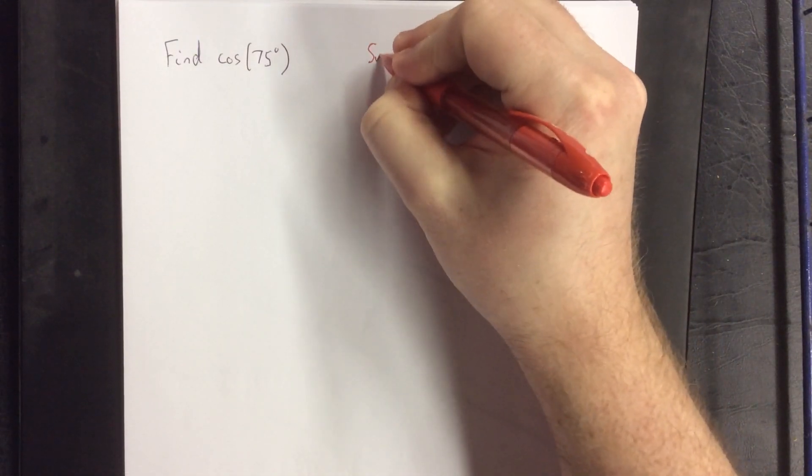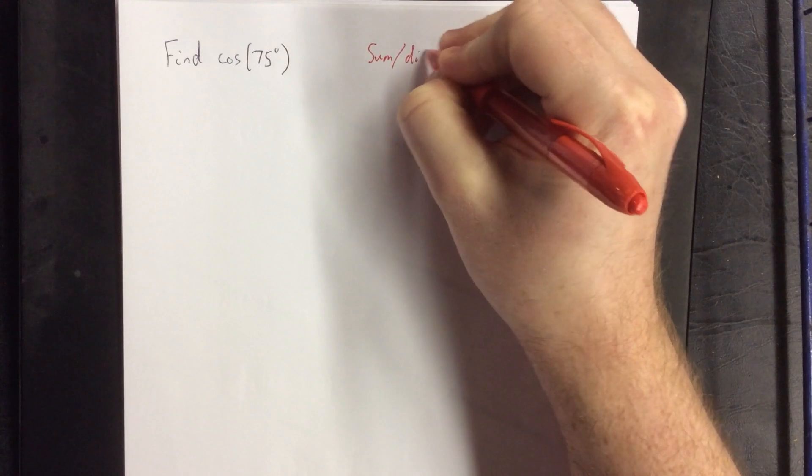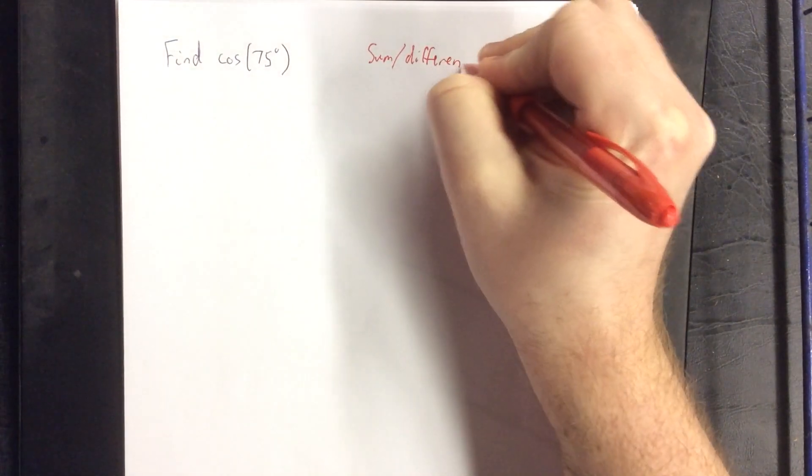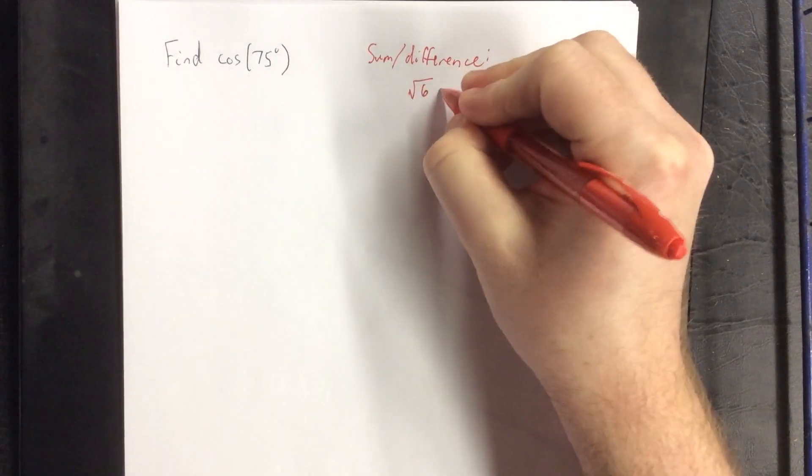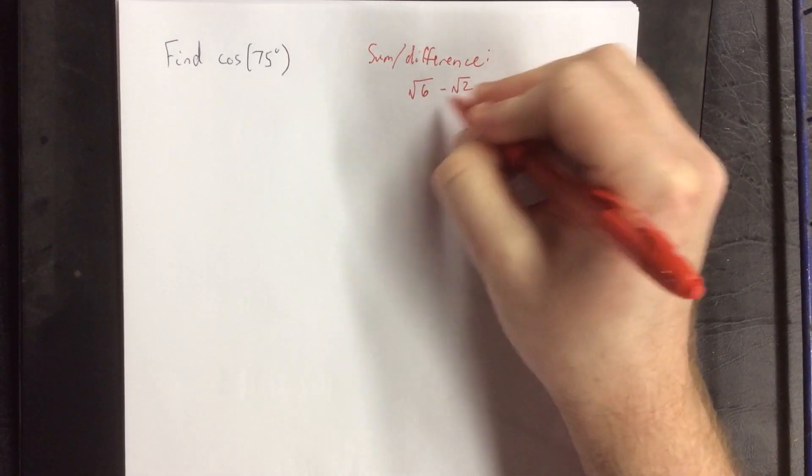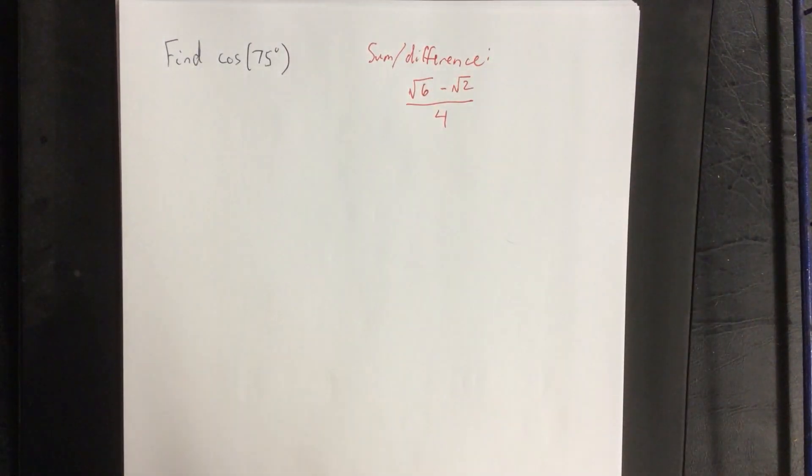In another video we found the cosine of 75 degrees by making use of the sum and difference identities. So from the sum and difference identities we got that the exact value of this is the square root of 6 minus the square root of 2 all over 4.